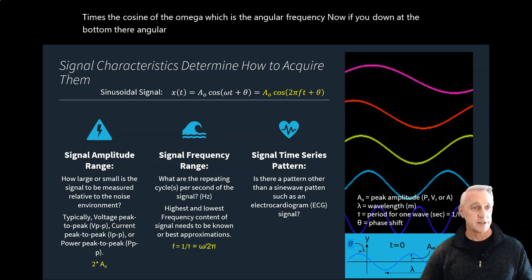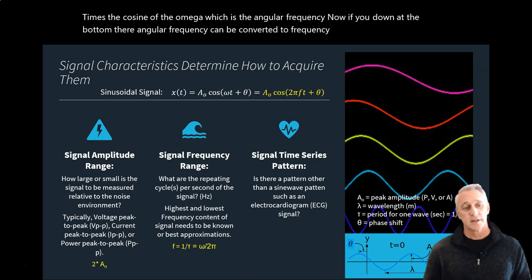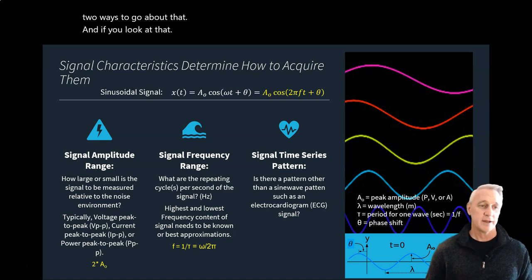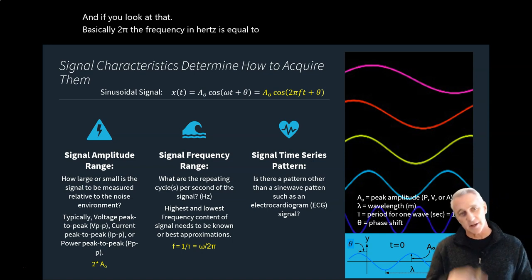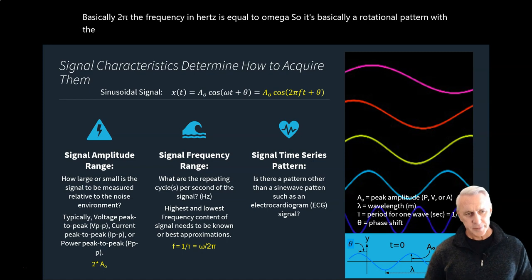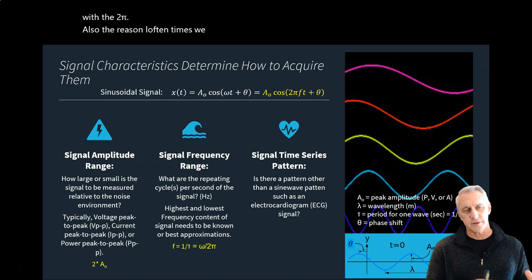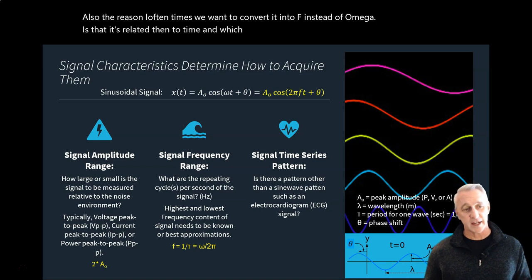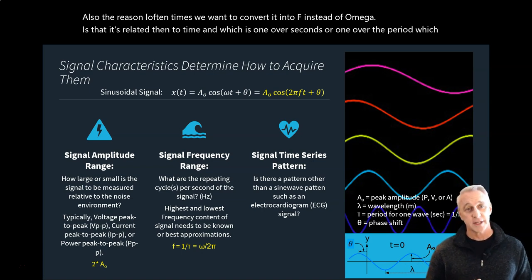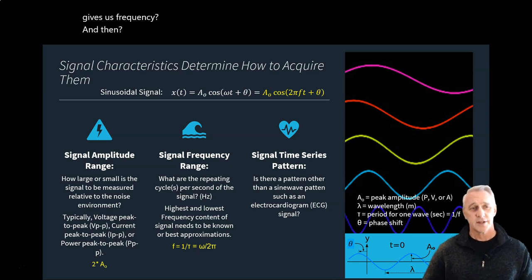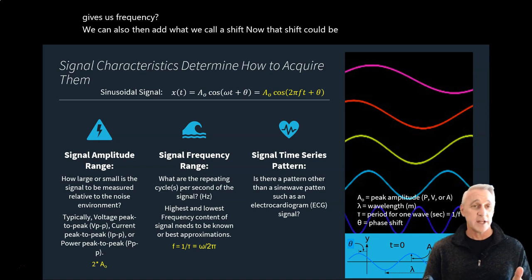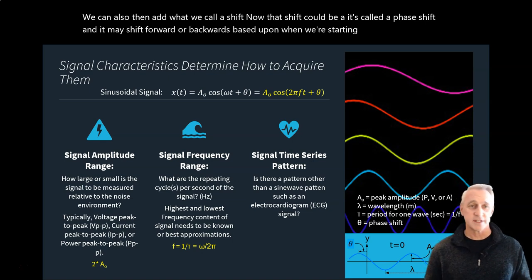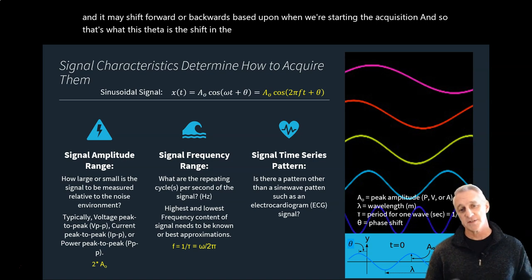Angular frequency can be converted to frequency in hertz: omega equals 2π times frequency. Frequency relates to time as 1 over the period (1/T), giving us hertz. We can also add a phase shift theta, which shifts the whole curve left or right based on when we start the acquisition.